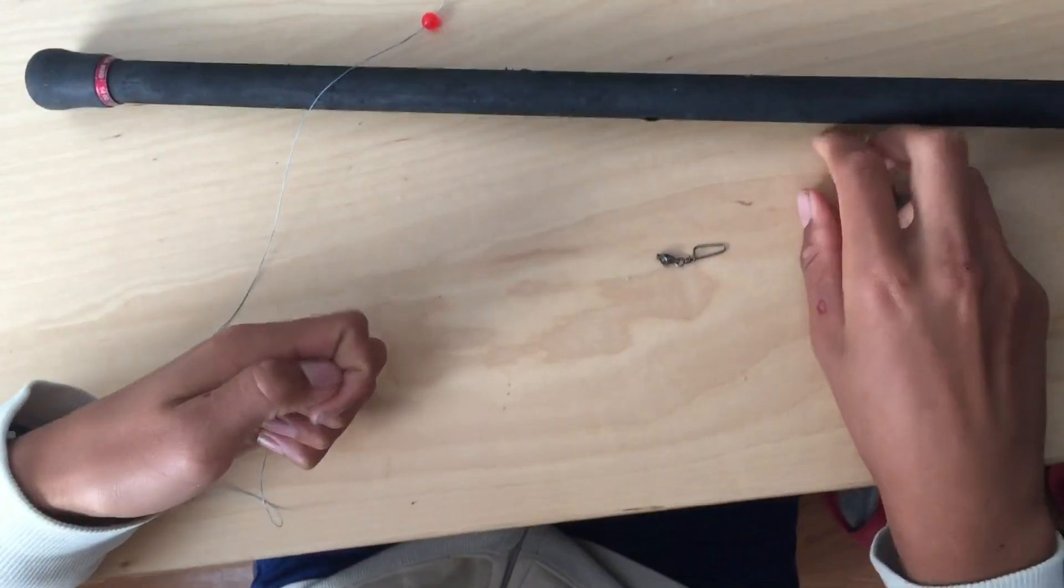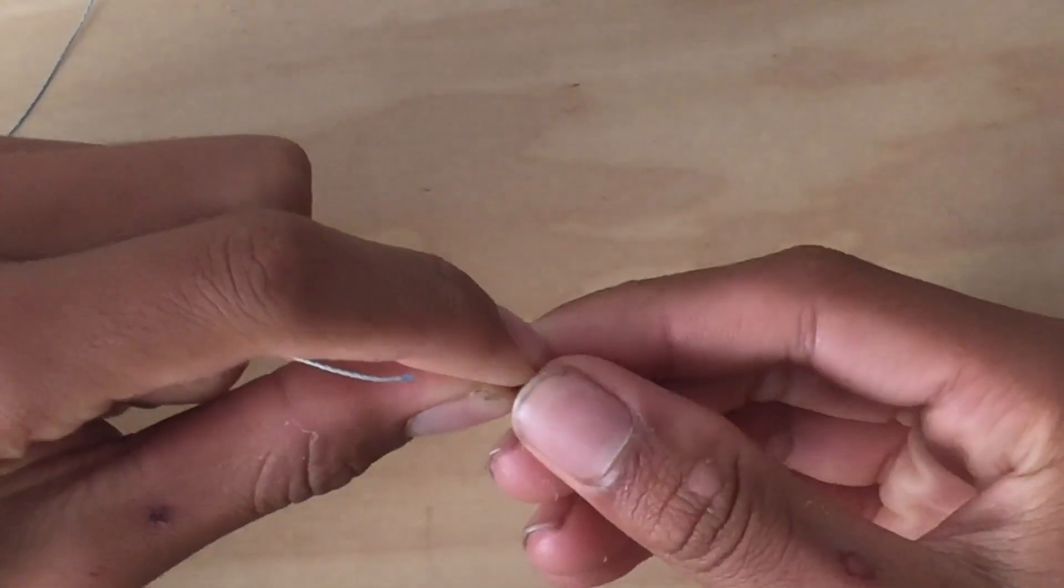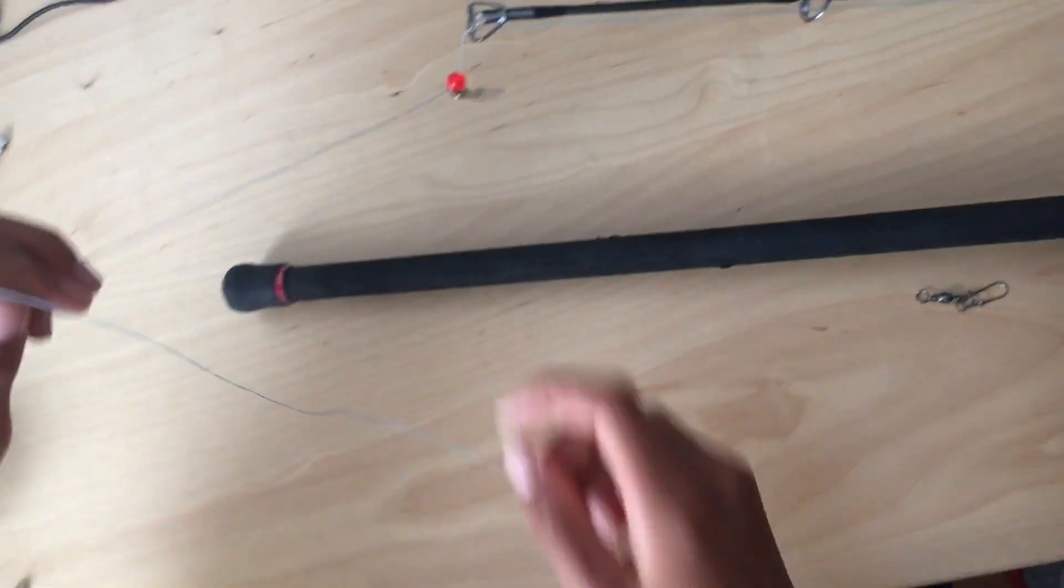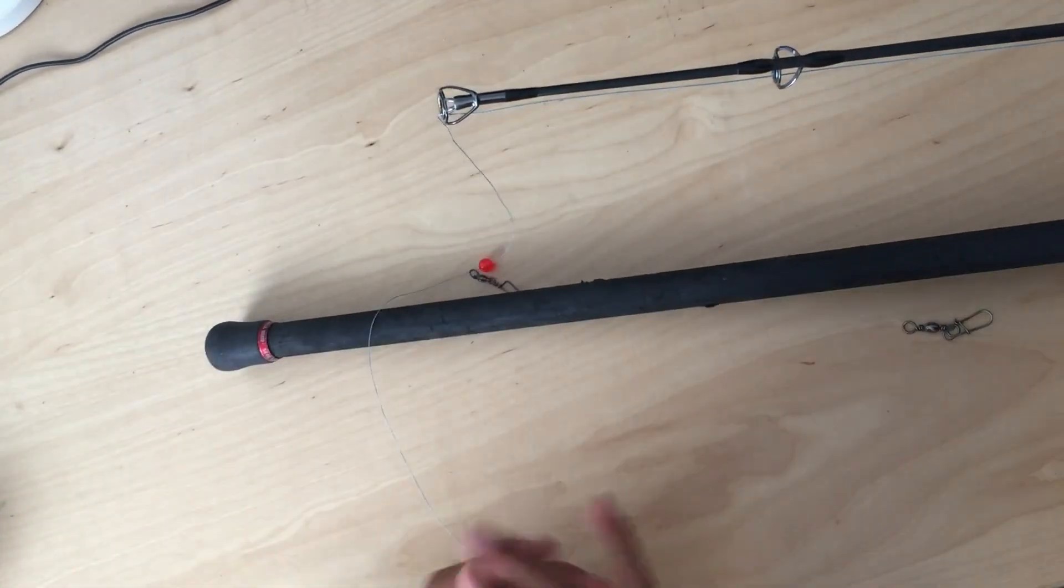And then I put another swivel. This swivel can work for a fish finder, which I'll explain in other videos. This small swivel, and then I put another big one.